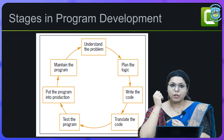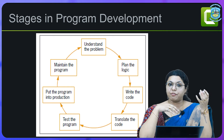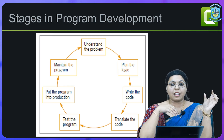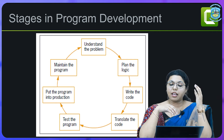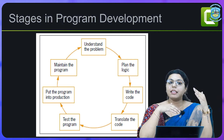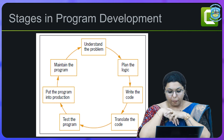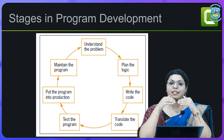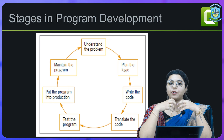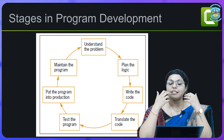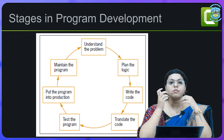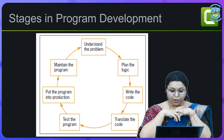The third stage is writing the code — starting from the header files, which is the start of the program, until the end. That is the complete flow. The fourth stage is translate the code, which means compiling the code. After writing the code, we compile it to see if there are any errors.